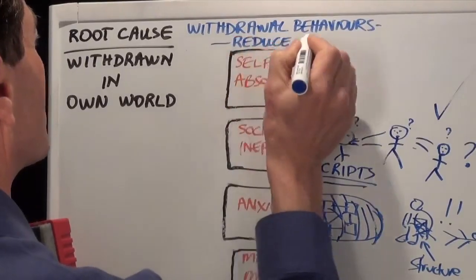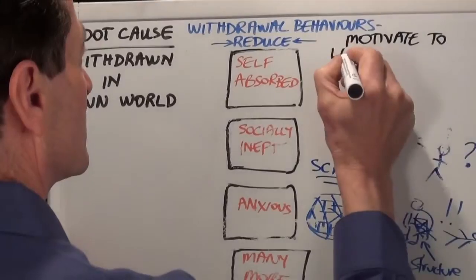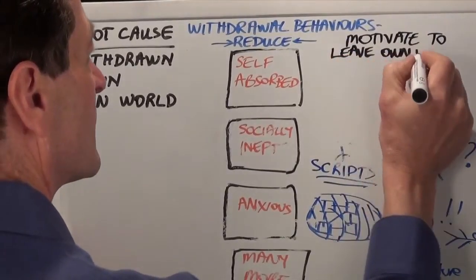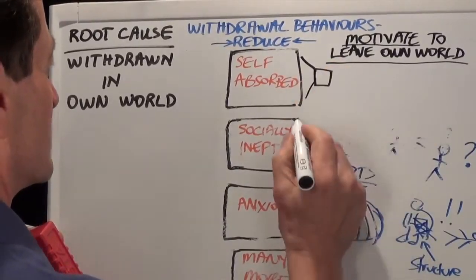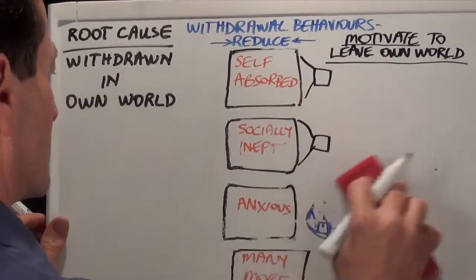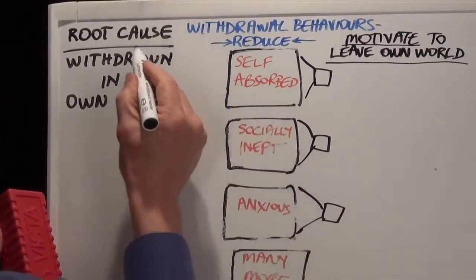No longer do we have the symptoms of an incurable disorder to patch over with piecemeal remedies. Instead, we just have more extreme withdrawal behaviors that we can reduce to normal or close to normal levels. And we achieve own world leaving by using motivation techniques. Note that every time we're successful in reducing one withdrawal behavior, then simultaneously all the behaviors are reduced, because they are all tied to that same root cause.